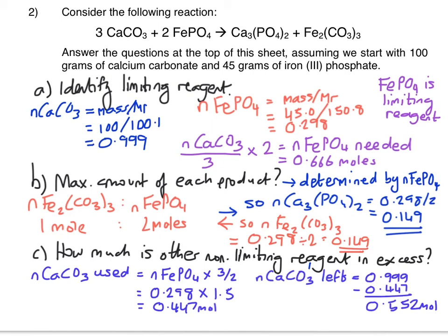So to do that, you take the amount of calcium carbonate that you had to start with, which was 0.999, and you subtract from that the amount of it that we've just calculated was actually used up, which leaves us with 0.552 moles in excess.